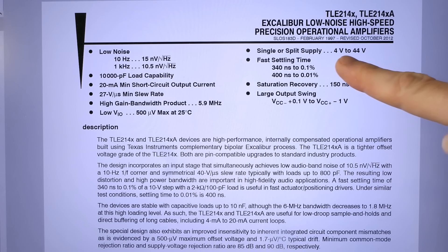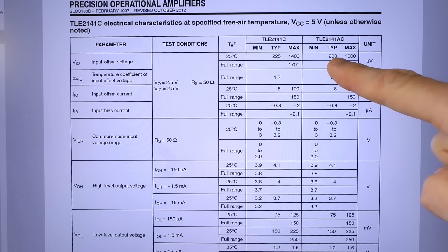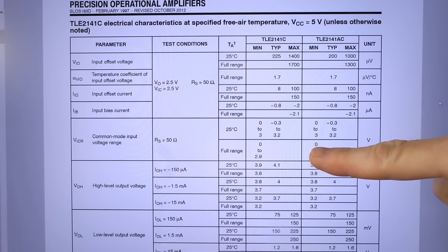And the other one, a wide supply range. Also nicely low offset. And the common mode input voltage range again includes the negative rail. And the low level and high level voltage at the output. It doesn't say it with no load but at 150 microamps. 75 millivolts low and 4.1 volts high.